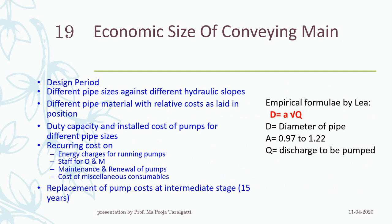Moving forward, what are the considerations needed while designing or calculating the economic size of the conveyance main? First: the design period — how many years you want that particular pipeline to serve. The design period is generally considered as 30 years for a typical pumping main. Second: different pipe sizes against different hydraulic slopes, which comes under topography and design.